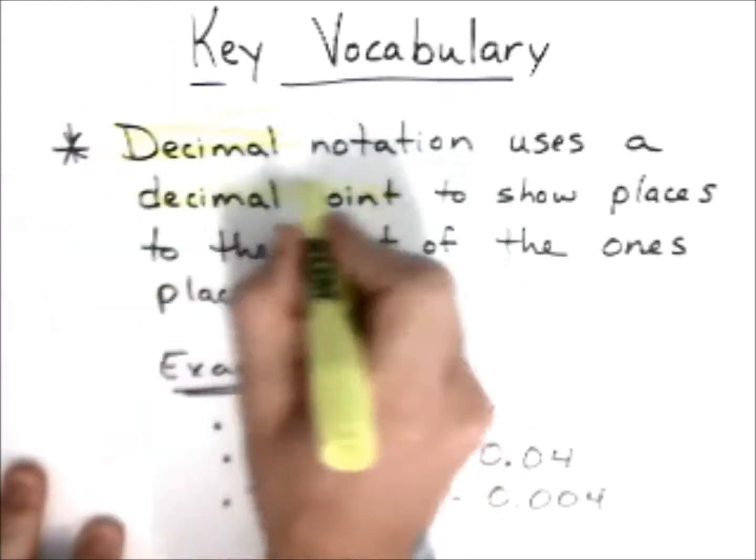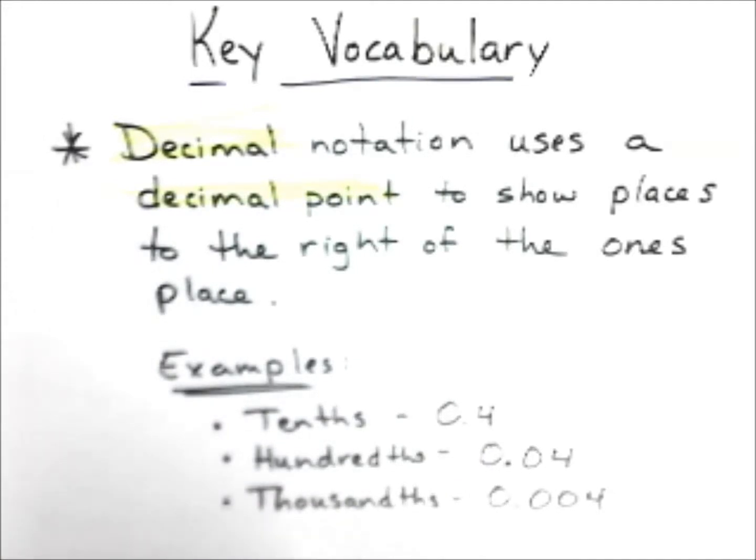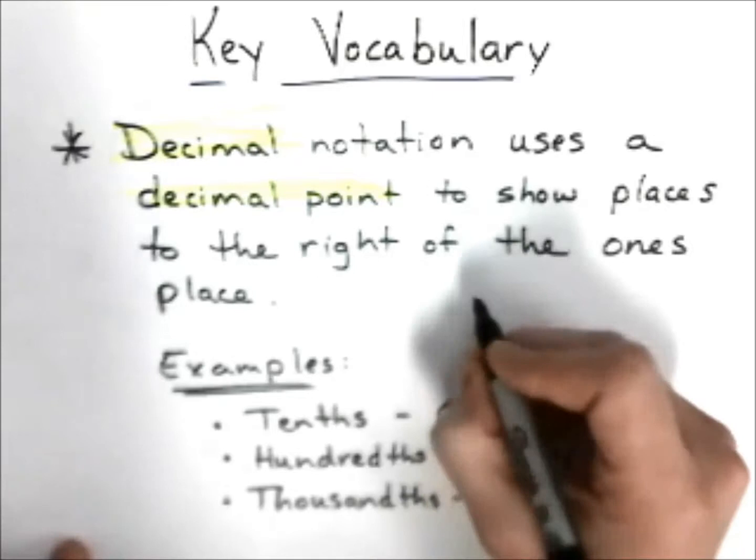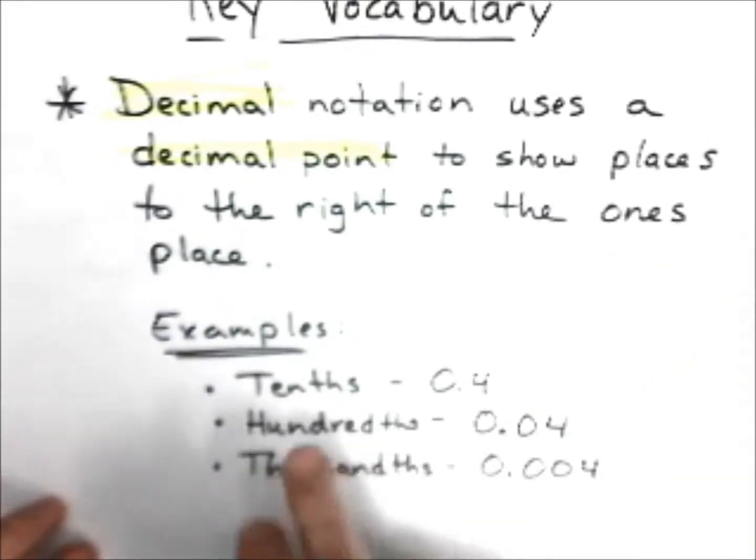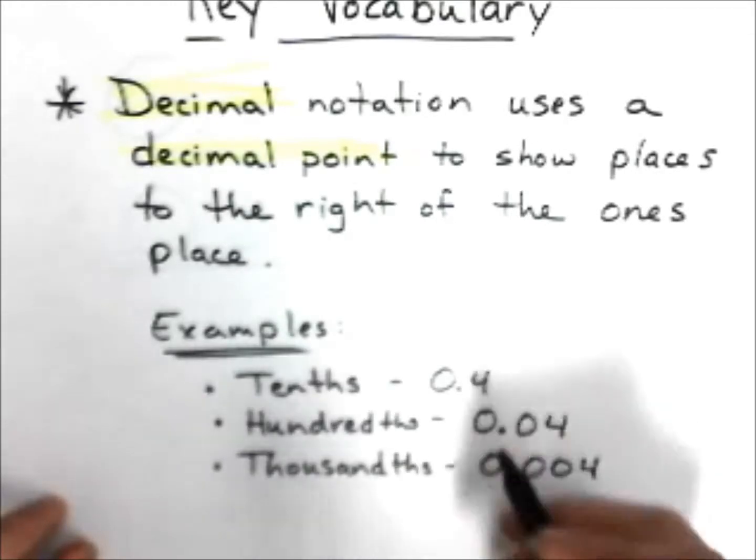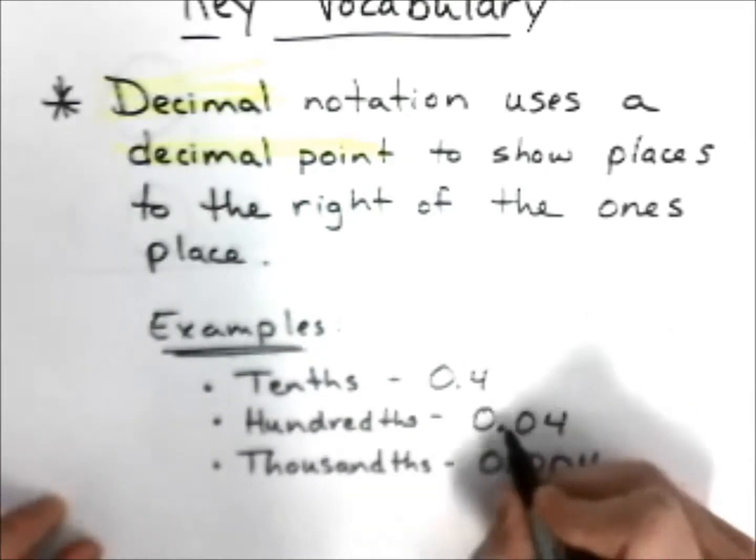That's right, anything that is a decimal is a number to the right of the decimal point. So we have a couple examples we're going to look at today. You have your tenths, which is the first number to the right of the decimal point, your hundredths, which is two numbers to the right of the decimal point...